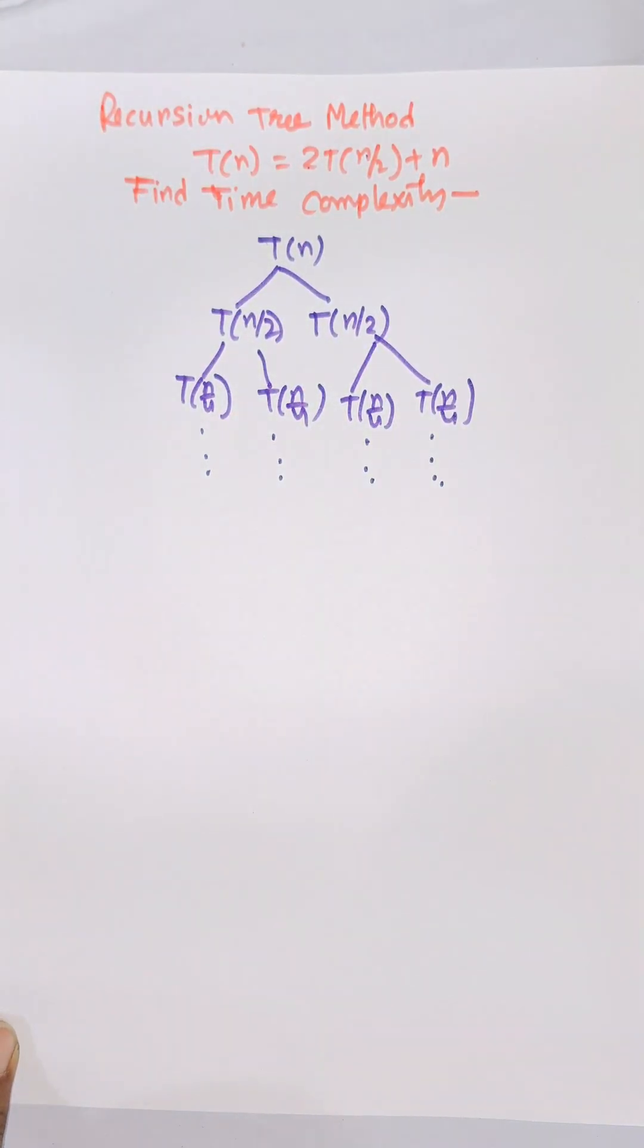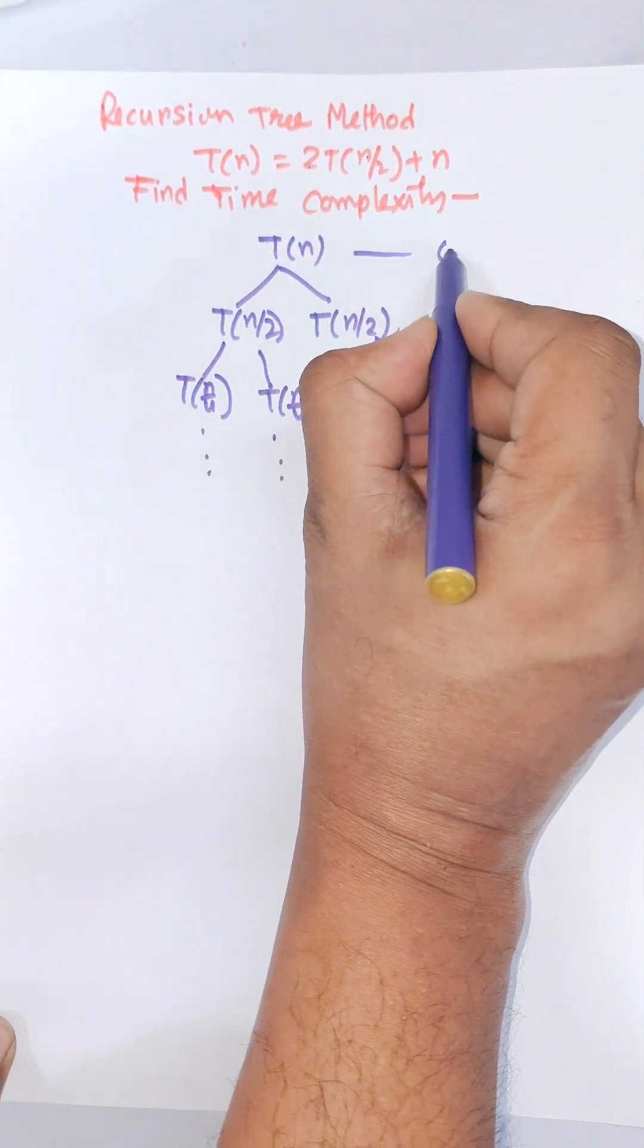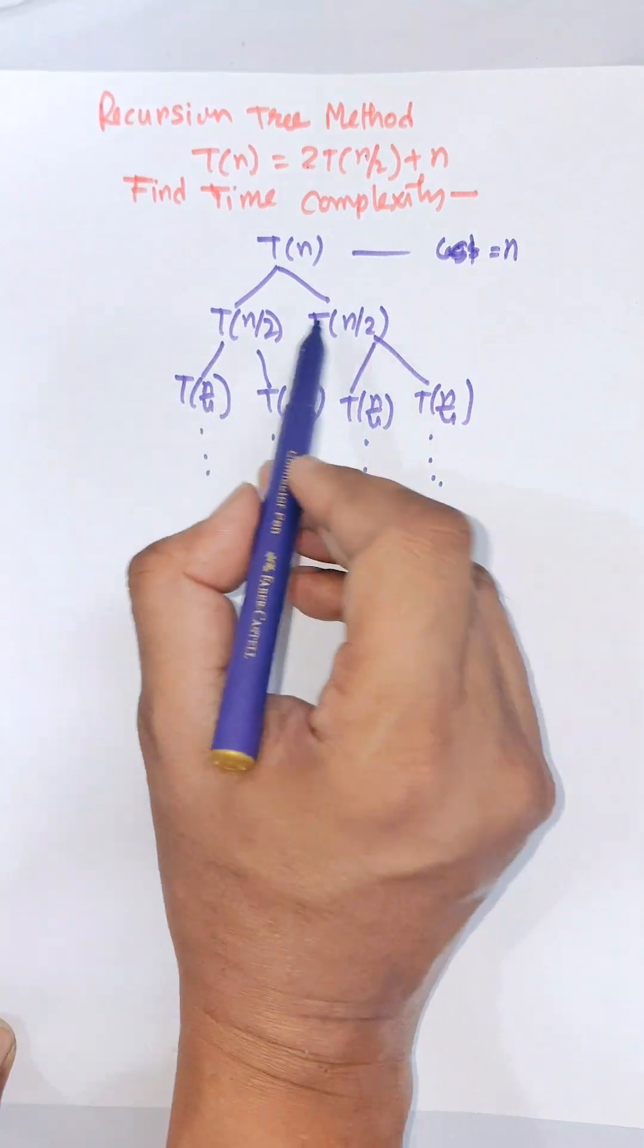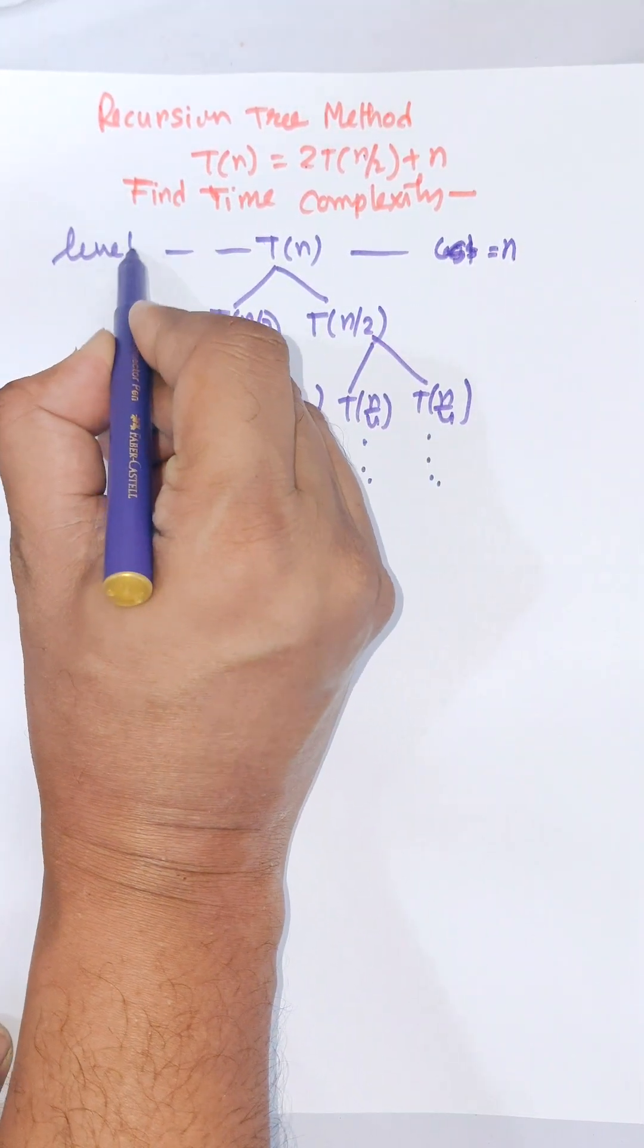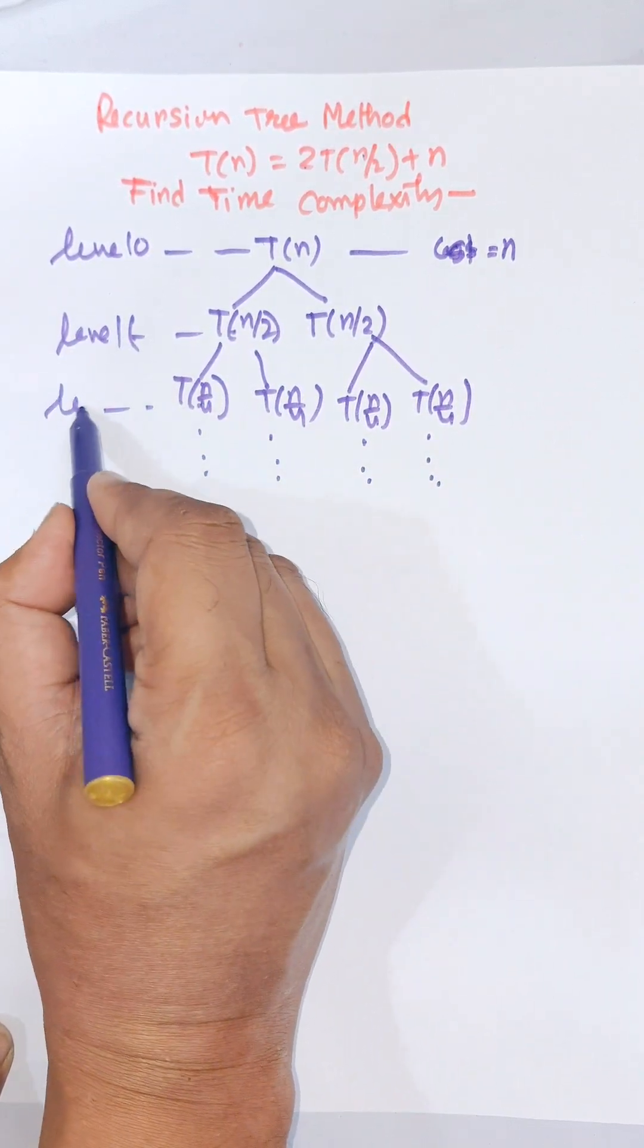It will continue again and again. First of all we need to know the cost of root is n. Here the cost of each node in the second level, this is level 0, this is level 1, this is level 2 and so on.